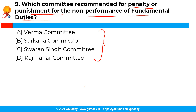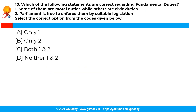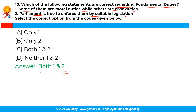The last question for this video is: which of the following statements are correct regarding fundamental duties? Statement 1 — some of them are moral duties while others are civic duties. Statement 2 — Parliament is free to enforce them by suitable legislation. The correct answer is option C, that both 1 and 2 are correct. The fundamental duties consist of some moral duties and some civic duties. There is no legal sanction against their violation, but Parliament is free to enforce them by suitable legislation.